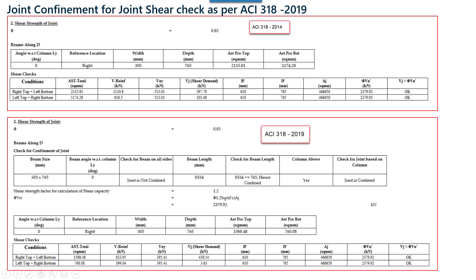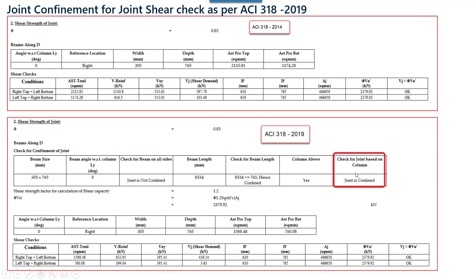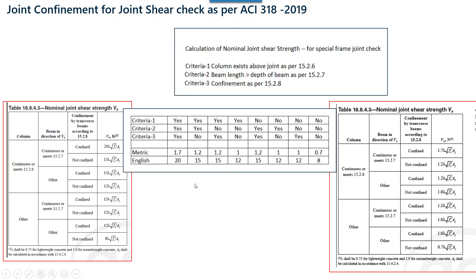When we have three cases — beam on all sides, beam length, and check for joint based on column continuity above — if two confinements are true and one is false, the shear strength factor is 1.2. When two are confined and one is not confined, the factor is 1.2. In this way, the factors from these tables are used.